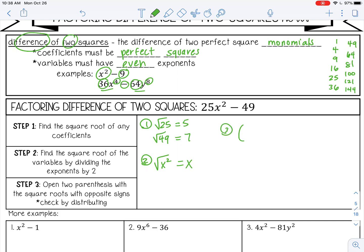And then number three, we're going to open up two parentheses with the square roots and opposite signs. So opposite signs mean the first one is going to have plus, the second one minus. If you switch those, it doesn't matter, it's still the same thing. So I'm going to take the square root of this first term, which would be 5x, and put it in the beginning of both parentheses. And then the square root of the last term, which we found right here, 7. And that is our answer.